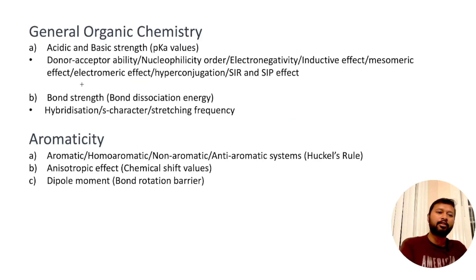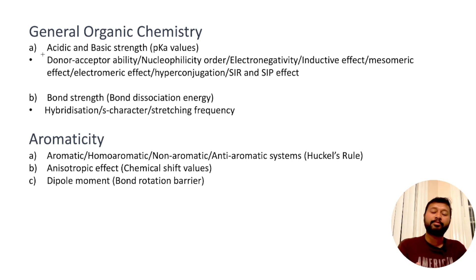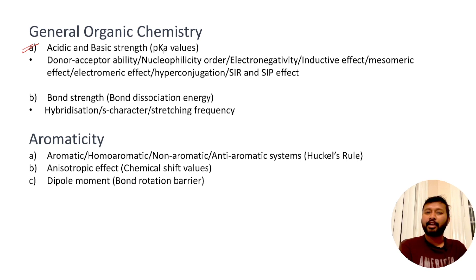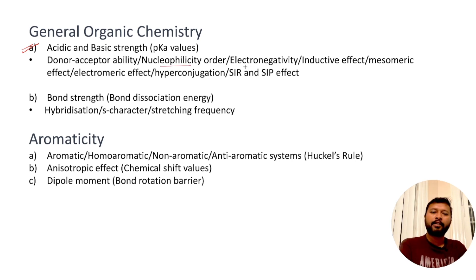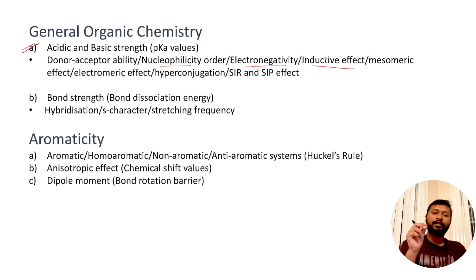Let's start from the basic topic: General Organic Chemistry (GOC). From GOC, generally we get questions on stability of carbocations — stability of the intermediate. Most of the questions can be done based on that concept. Apart from that, there is the concept of acid and base strength where pKa values are asked, including donor-acceptor ability, nucleophilicity order, electronegativity order, and inductive effect.